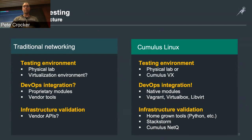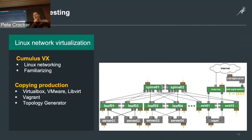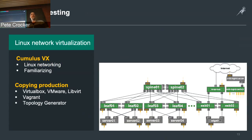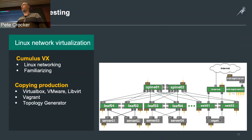What I have running right now is a typical leaf and spine Clos-based architecture. I've got a few spine switches, some leaf switches and exit switches, various Ubuntu boxes as servers so I can run tests and send application traffic. I also have a separate out-of-band management environment to run my Ansible playbooks and verify everything is happy. This entire environment — actually multiple copies of it — is spinning up right now in the background.